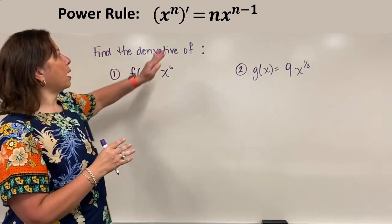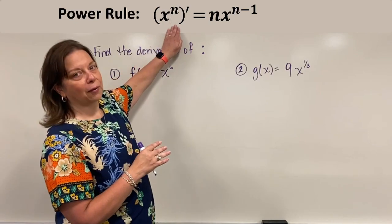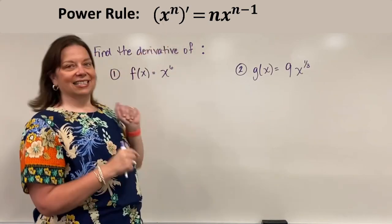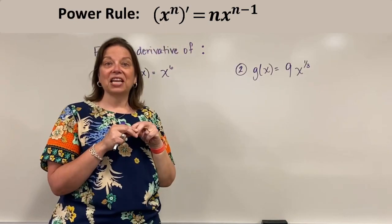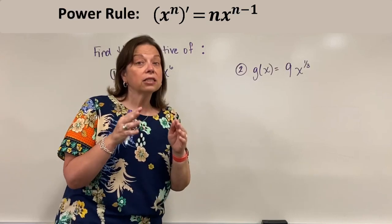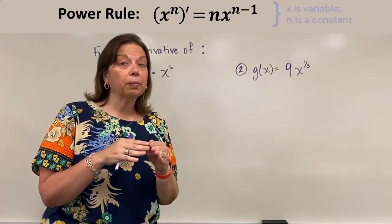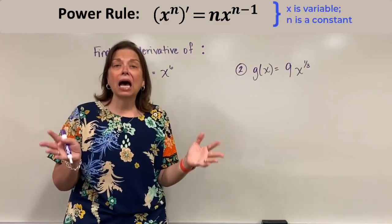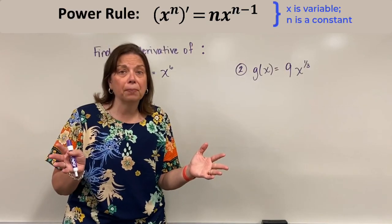So just as a reminder, the power rule is something like this. If I have x to the n, where x is truly a variable and n represents some constant number,